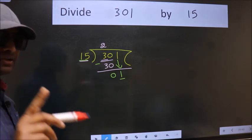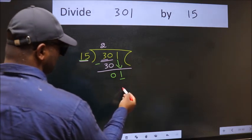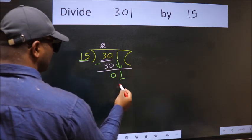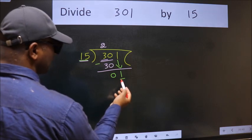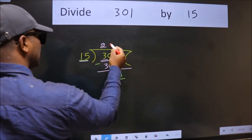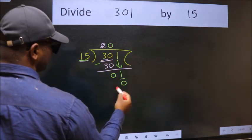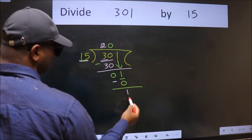Instead of that, what we should think of doing is: which number should we take here? If I take 1, we will get 15, but 15 is larger than 1. So what we do is we take 0 here. So 15 into 0 is 0. Now we subtract. We get 1.